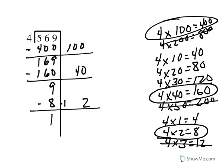Now I want to add up my partial quotients: 100 plus 40 plus 2 to give me 142. And that's actually my quotient, my answer, which goes up here at the top. And the 1 ends up being my remainder.